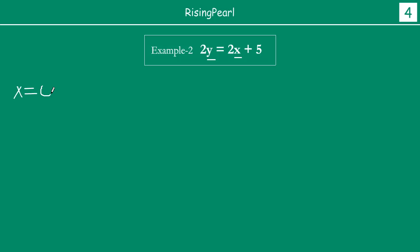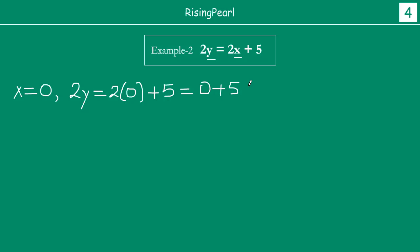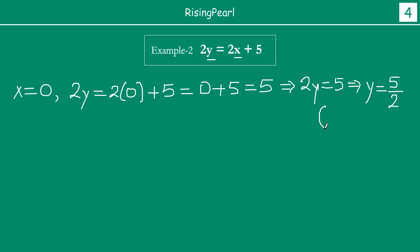Let us say x equals to 0. If we put x equal to 0, the equation becomes 2y equal to 2 times 0 plus 5, which is 0 plus 5, equal to 5. So we have 2y equal to 5, and dividing both sides by 2, we get y equal to 5 by 2. So the ordered pair (0, 5/2) is a solution for our equation, because substituting x=0 and y=5/2: right hand side is 0+5=5, and 2 times 5/2 is also 5. Left hand side equals right hand side.